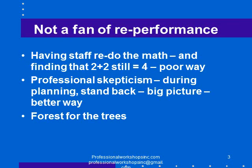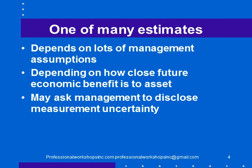As an auditor, I'm not a big fan of re-performance as an audit procedure. Assigning junior staff to redo the math and finding that two plus two is still four is a poor way of auditing goodwill and determining whether an impairment is necessary. Much better is to use professional skepticism during planning — standing back, looking at the big picture, and thinking about whether or not it makes sense that the goodwill is still there. Once you've done that, if you then want to assign staff to re-perform the math that's okay, but you need to see the forest for the trees.